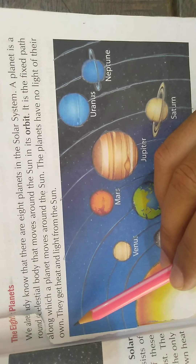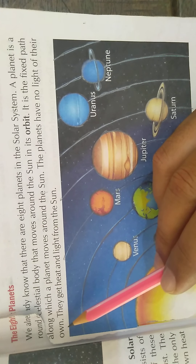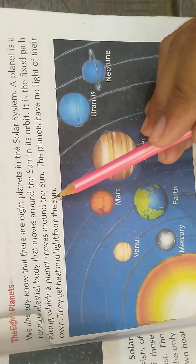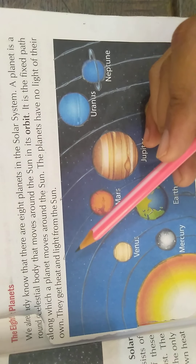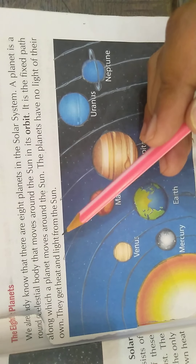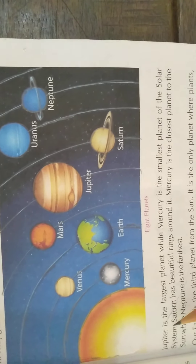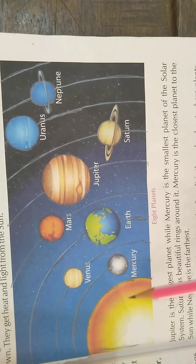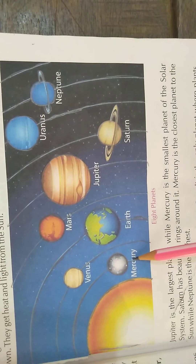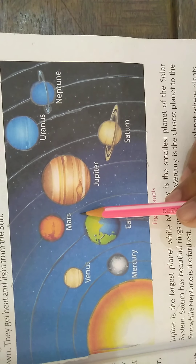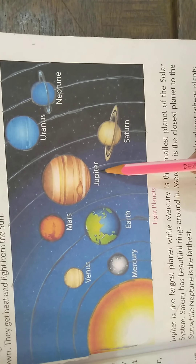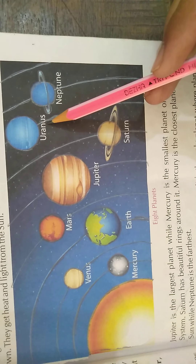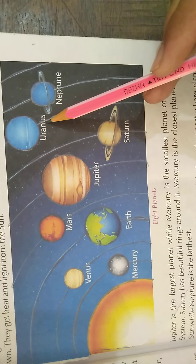The planets have no light of their own — planets ka apna koi prakaash nahi hota. They get heat and light from the sun — ve surya se garmi aur prakaash praapta karte hain. Here is the picture of the solar system. You can easily see: this is the sun, and the first planet is Mercury, then Venus, third Earth, fourth Mars, fifth Jupiter, sixth Saturn, eighth place is Uranus and seventh place is Neptune.